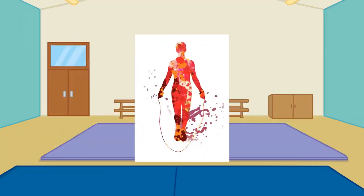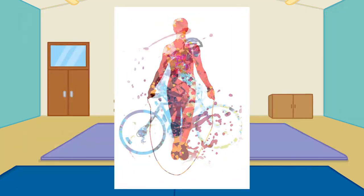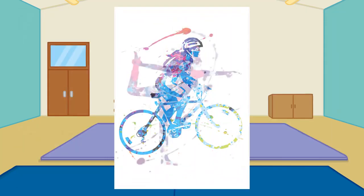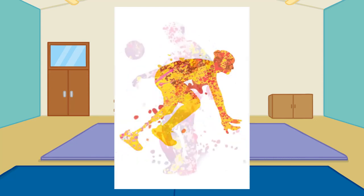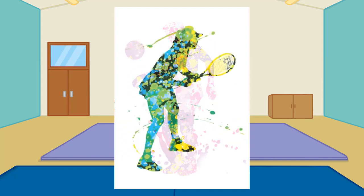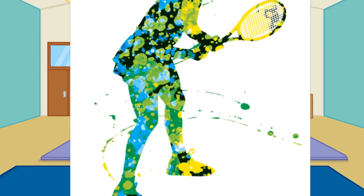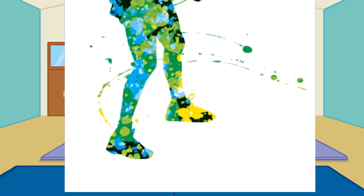Today we're having a look at our sports silhouette posters. We have a range of six colourful posters showing the silhouette of different sporting figures, including a tennis player, cyclist, athlete, and gymnast.